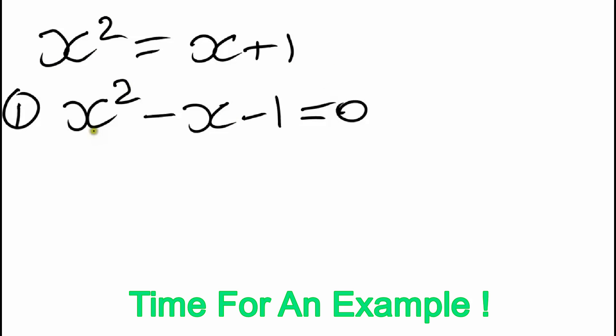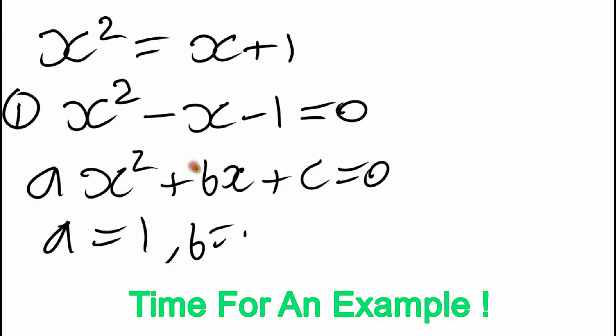We want it in the form A x squared plus B x plus C equals 0. So in our case, A equals 1, B equals minus 1, and C equals minus 1.